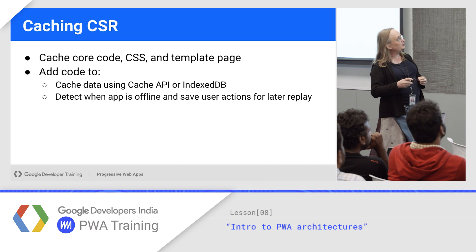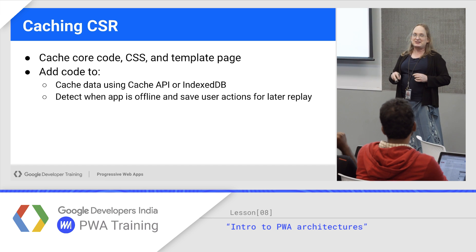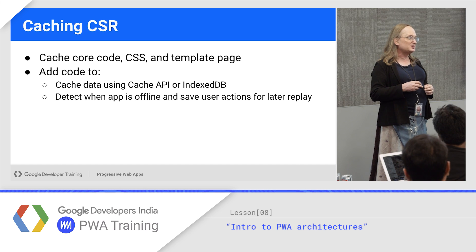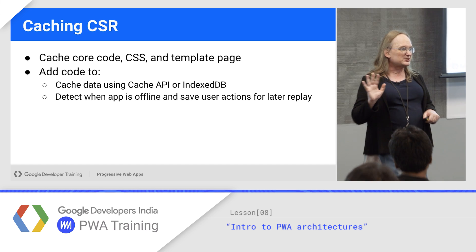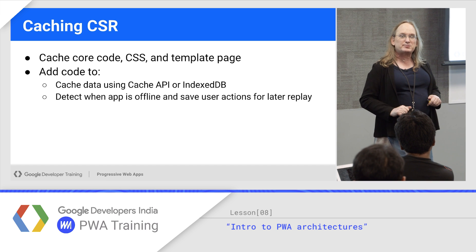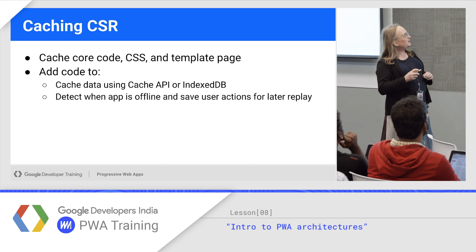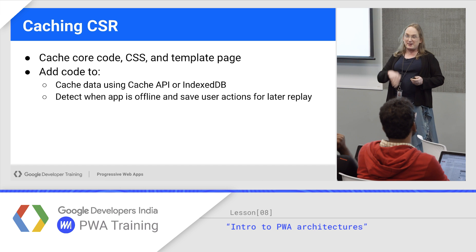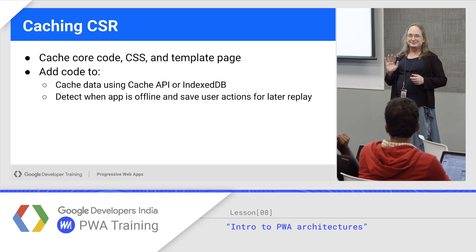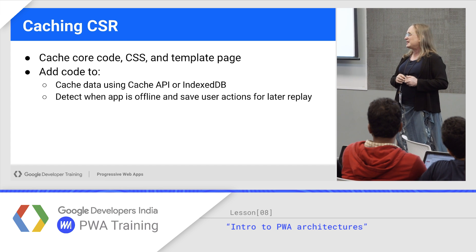To cache a client-side rendered app, basically cache your single page app's core code, your CSS, your template page. For Cache API vs IndexedDB: Cache API takes anything that has a URL; everything else typically goes in IndexedDB. There are exceptions — the Pokedex PWA actually caches images in the database as blobs because it made more sense for how things are pulled up and manipulated. A nice thing with an offline client-side rendered app is you can save user actions for replay. In an e-commerce app, somebody might set up an order. Gmail actually supports offline mode — you can write emails and queue them up for sending when you get back on the network.